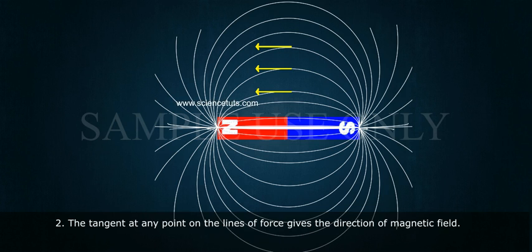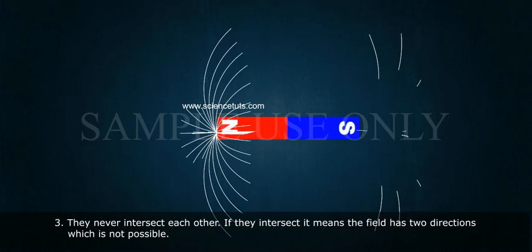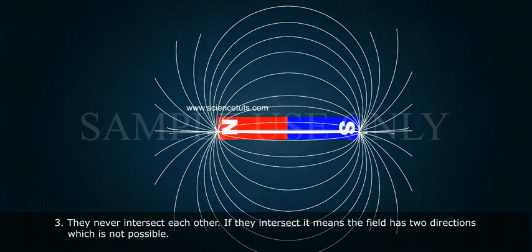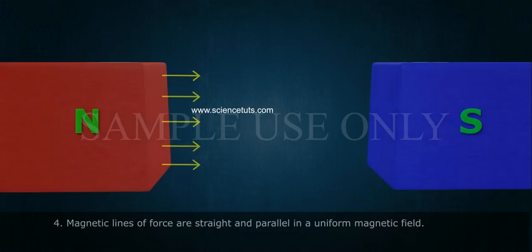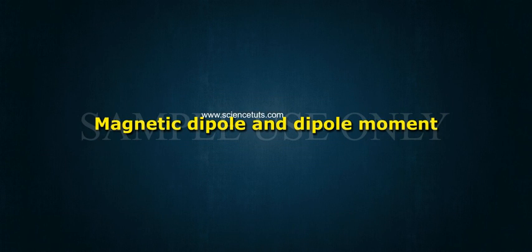Three: they never intersect each other. If they intersect, it means the field has two directions, which is not possible. Four: magnetic lines of force are straight and parallel in a uniform magnetic field.